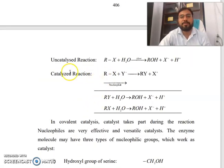Uncatalyzed reaction: RX + H2O undergoes slow reaction and gives ROH + X- + H+. Catalyzed reaction: RX + Y- gives RY + X-. Overall reaction: RX + H2O → ROH + X- + H+.